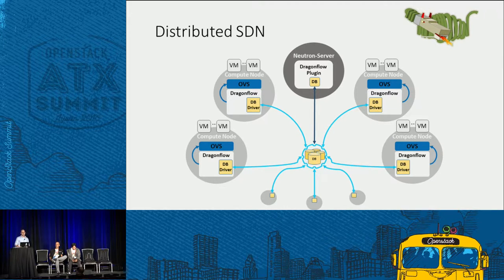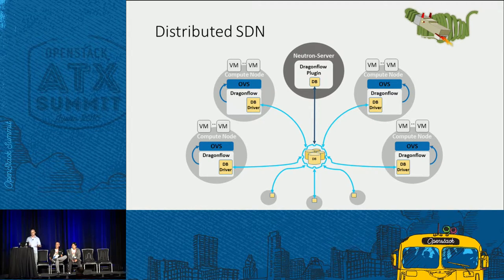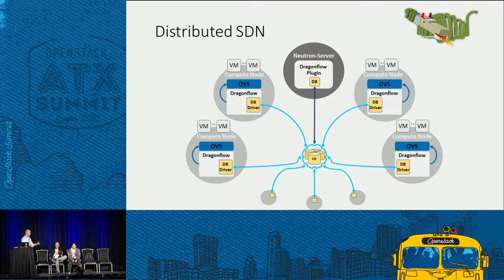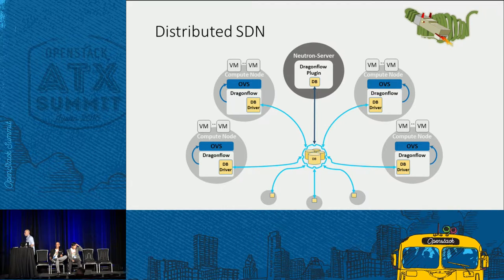The database holds policy-level abstractions and information, and not anything else. This makes the data being distributed to all the compute nodes relatively small. Second, it lets us have smart logic in the compute nodes that knows how to take this policy and translate it according to the hardware running on the compute nodes. This makes it very easy to do smart integration with smart NICs and all kinds of offload capabilities.